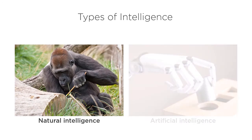Natural intelligence is the type of intelligence that living organisms are born with and acquire over their lives. This includes organic intelligence like that of humans, animals, insects, and even bacteria. It also includes collective intelligence like a school of fish, a swarm of bees, or a colony of ants.